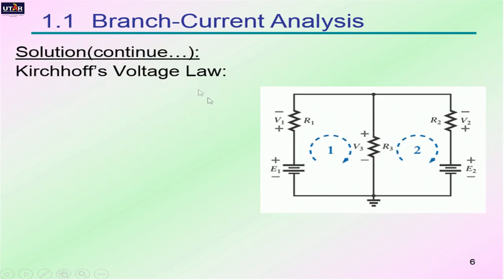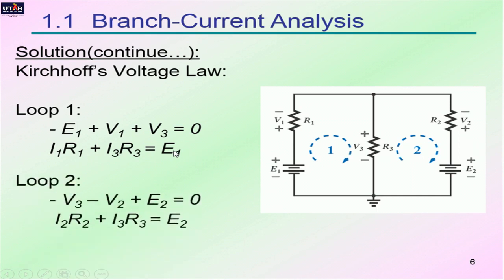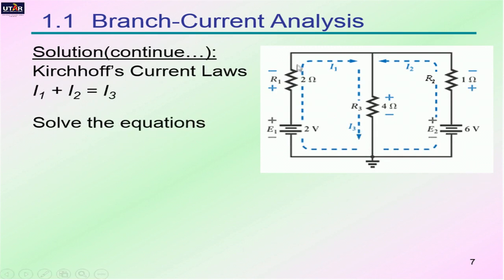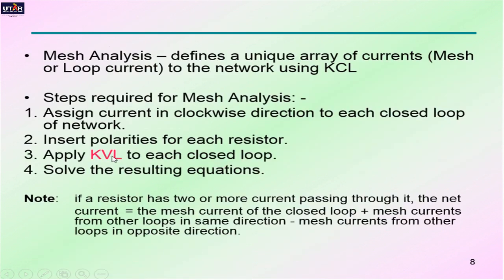We apply Kirchhoff's voltage law in each mesh. For mesh 1, this is the equation obtained, and for mesh 2, this is the equation obtained. At a particular node, I1 and I2 are flowing in and I3 is flowing out, so I1 plus I2 equals I3 according to Kirchhoff's current law. Now we have three sets of equations: the first from mesh 1, the second from mesh 2 based on KVL, and the third from the node based on KCL. With three unknowns and three equations, we can solve for the answer.